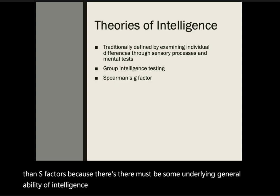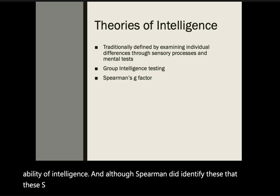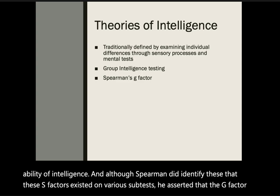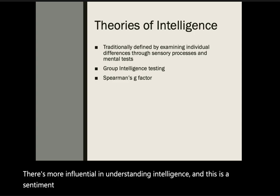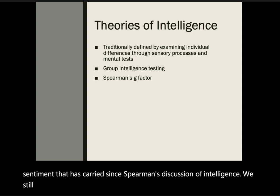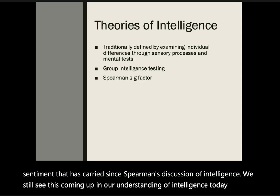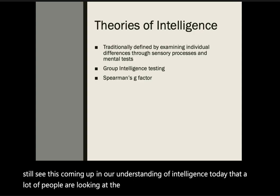Spearman asserted that the G factor was more influential than S factors in understanding intelligence. This sentiment has carried through to today — a lot of people are still looking at the ways there is some underlying consistency of intelligence.